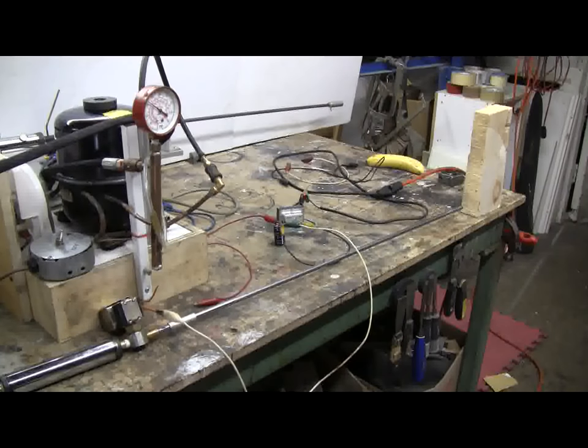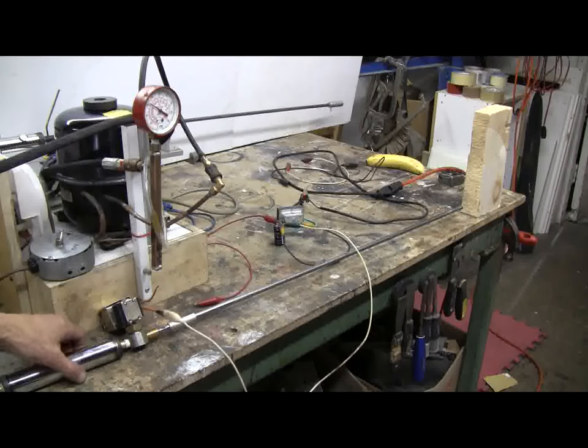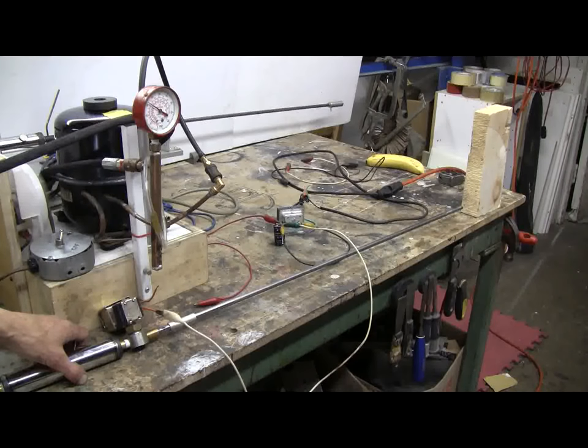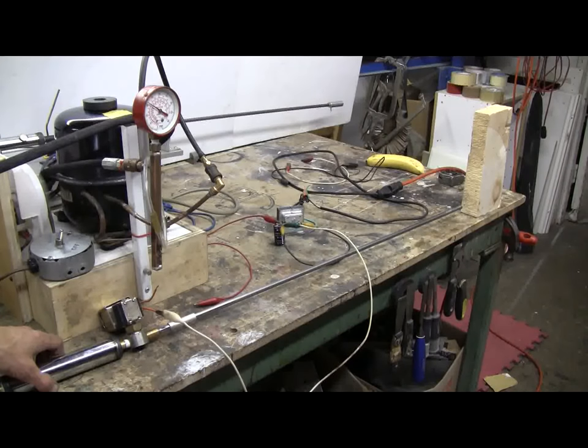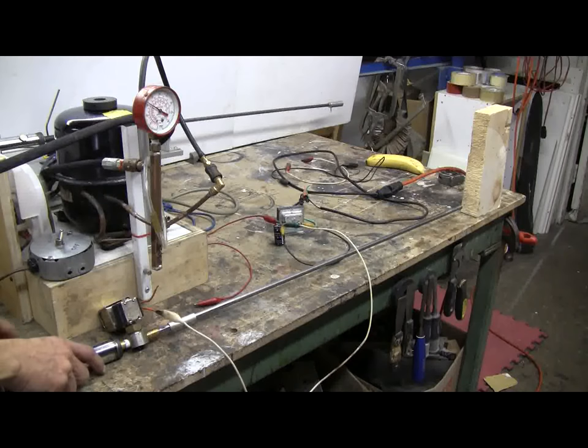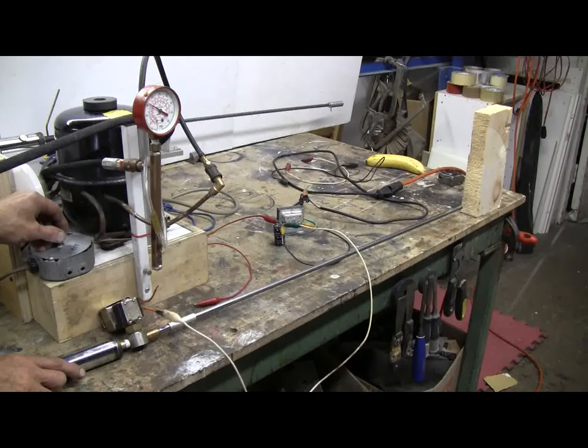For this last test, I've loaded a .25 caliber BB into the 32 inch long .25 caliber barrel that I've attached to this test cannon. We're aimed at a pine block at point blank range. I'm going to charge up to 450 psi pressure and then fire using the DC supply.